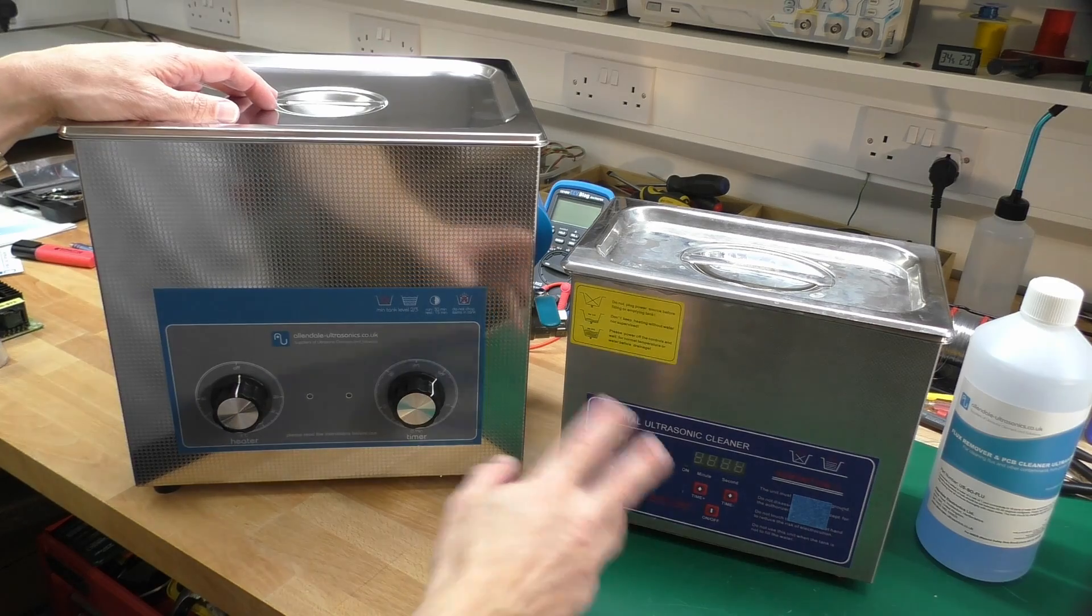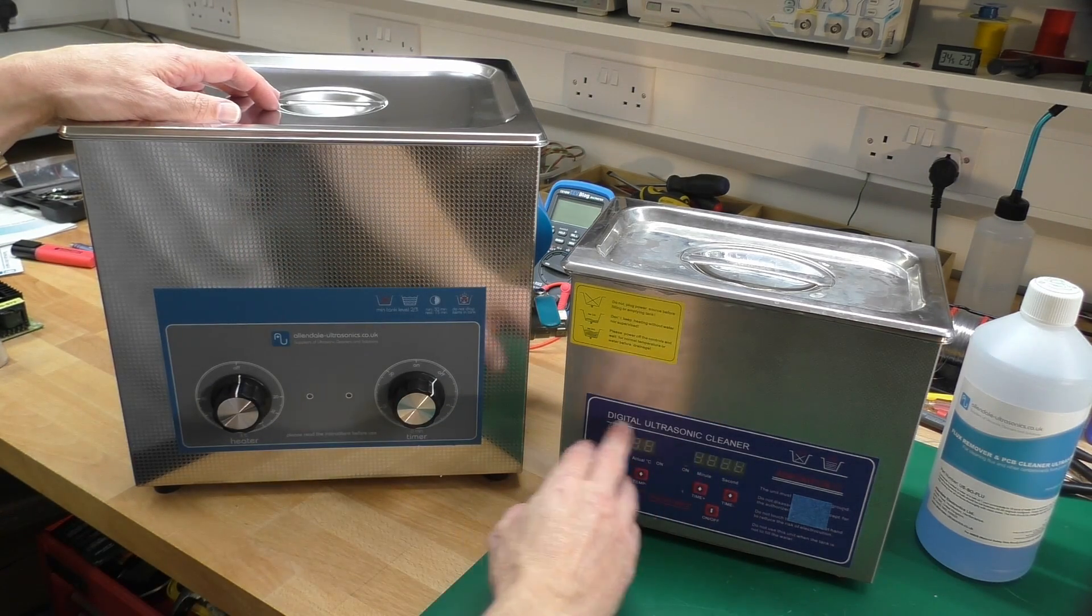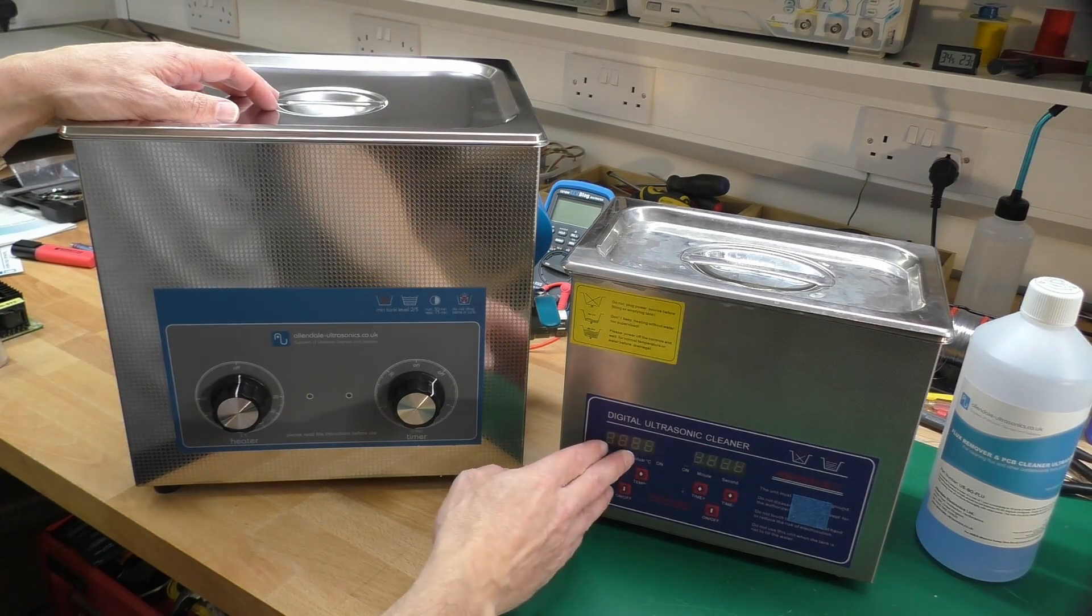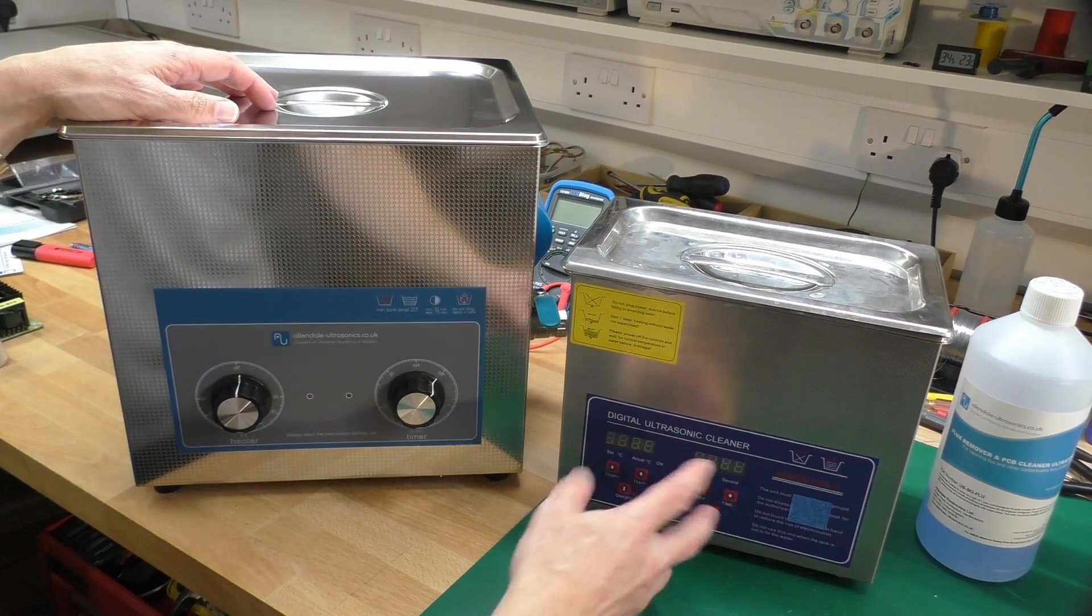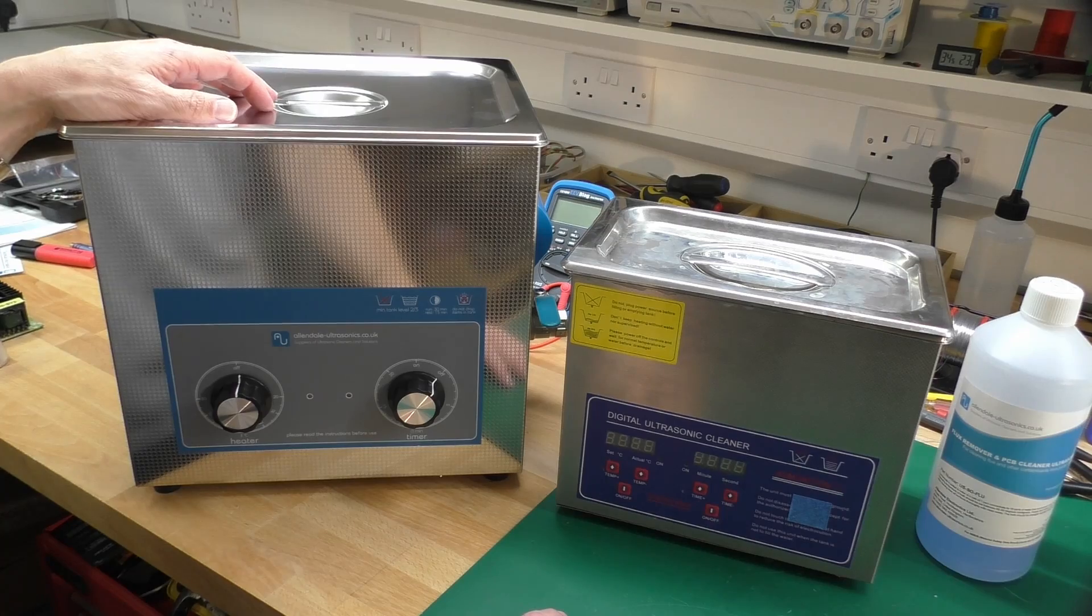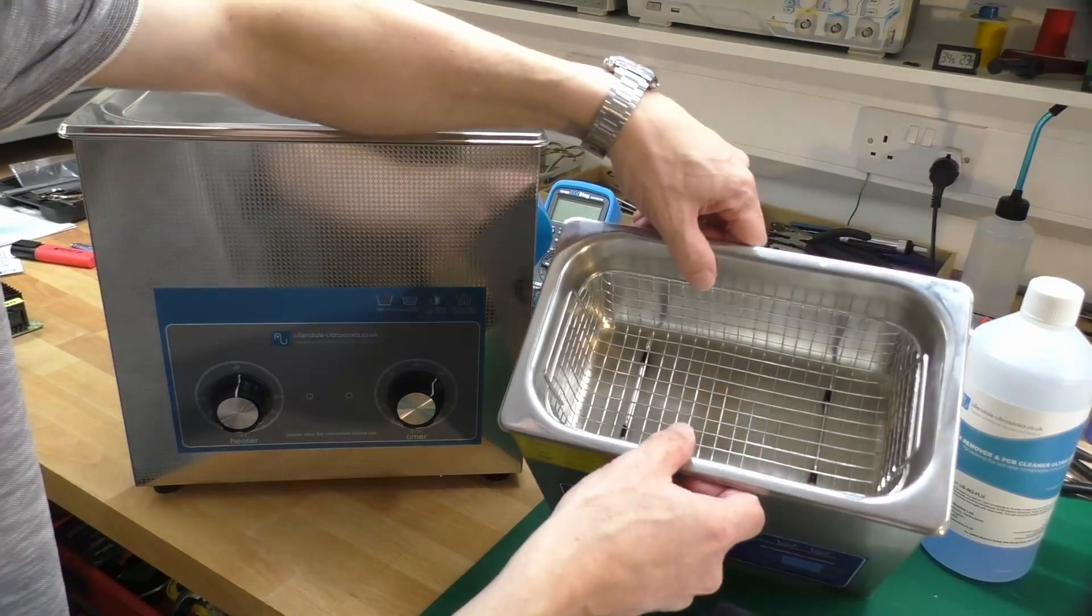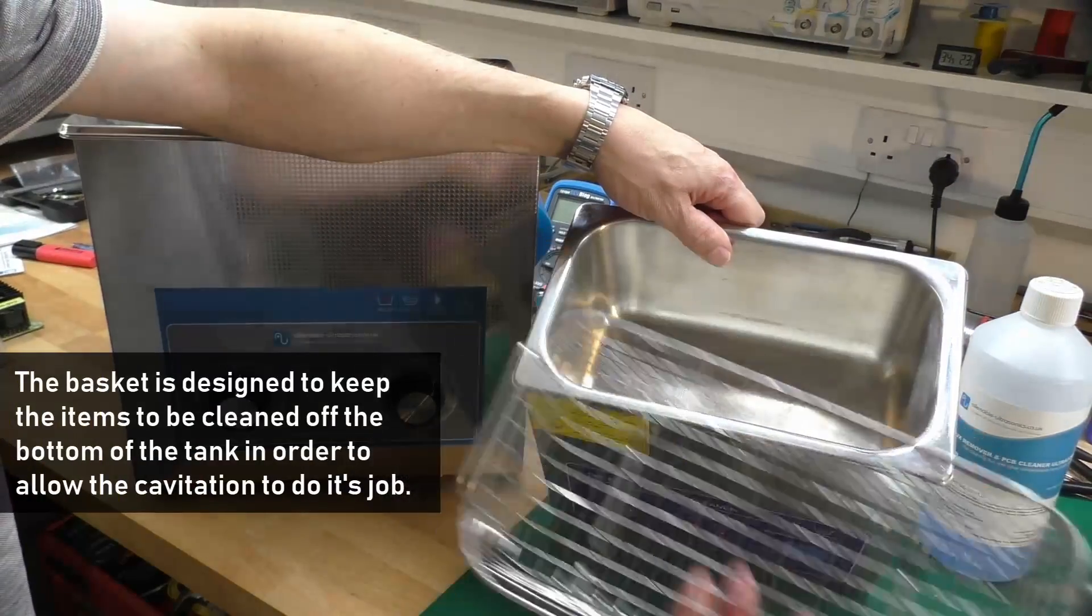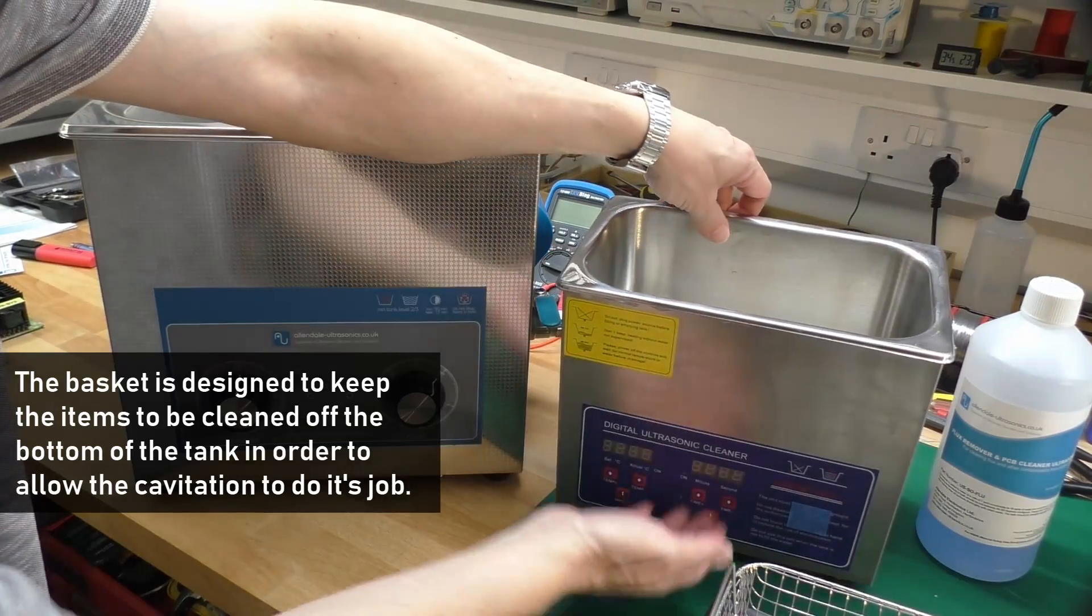Here we are in front of both units - cheap Chinese one on the right, my new one on the left. The cheap Chinese one says it's a digital ultrasonic cleaner, but that basically just means it's got digital controls, a digital timer and a digital temperature readout and control. Nothing fundamentally different between that one and the one on the left. They consist of a lid, a basin, and a little basket here for putting your items in that you want to clean.